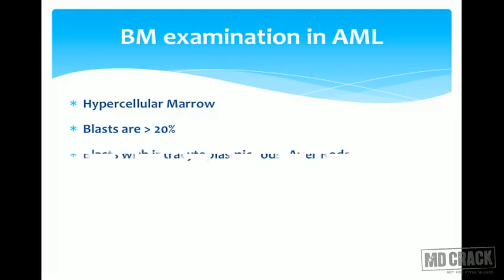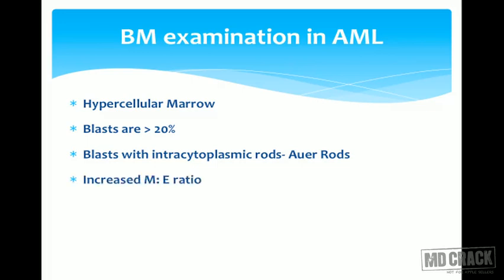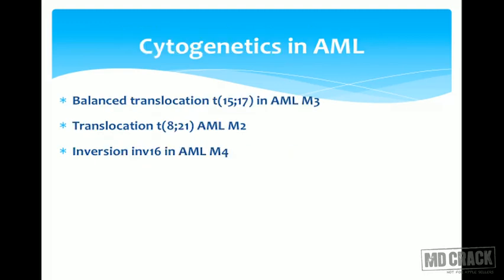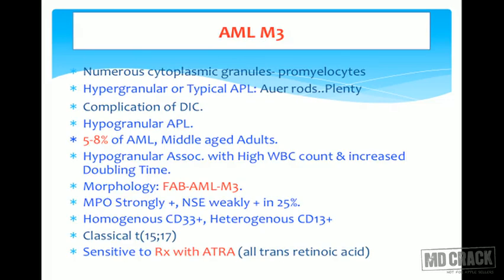Bone marrow examination shows hypercellular marrow with blast more than 20%. Auer rods are diagnostic of myeloblast. The myeloid:erythroid (M:E) ratio is markedly increased; fewer erythrocytes are seen. Peripheral thrombocytopenia is also present. Cytogenetic analysis is important: AML M3 has translocation t(15;17), AML M2 has t(8;21), and AML M4 has inversion 16. Try to remember these three cytogenetic abnormalities.